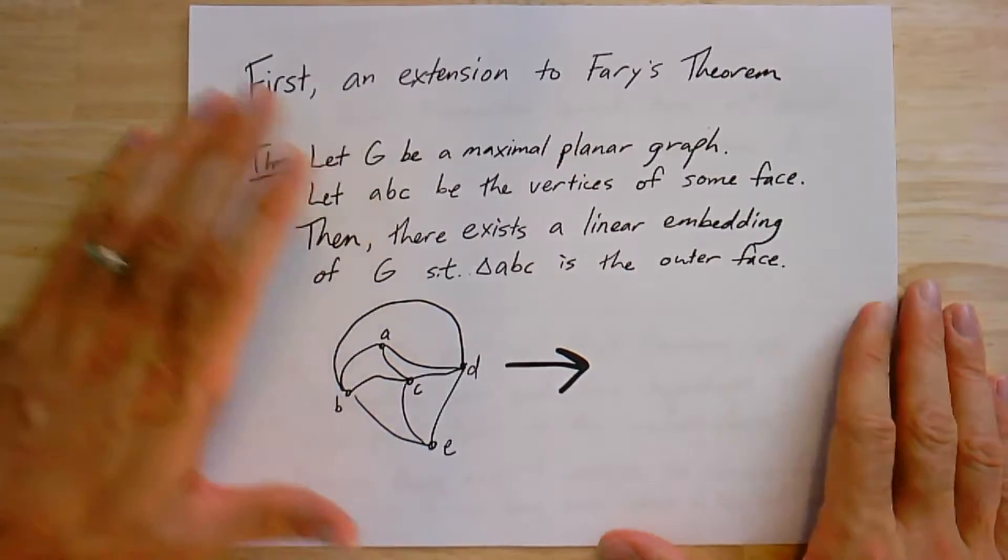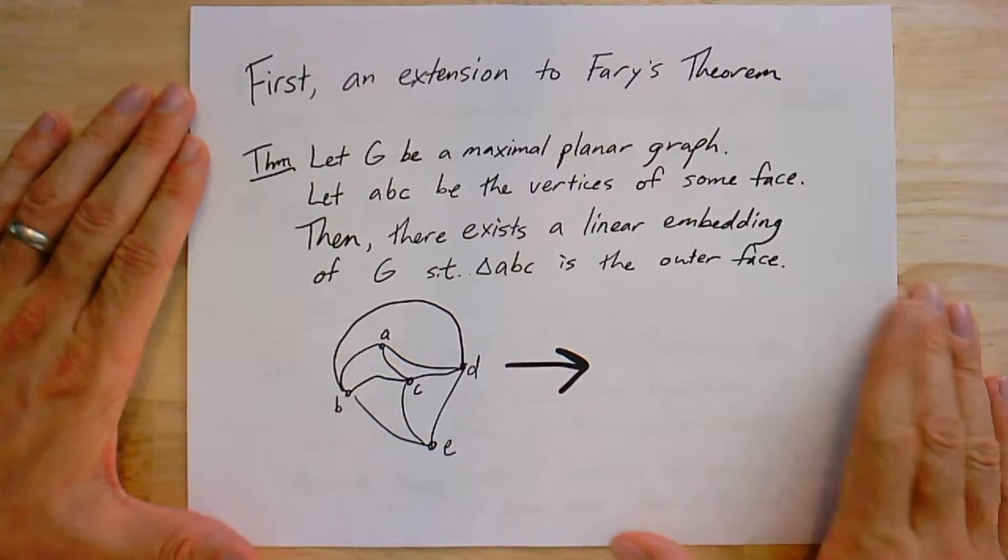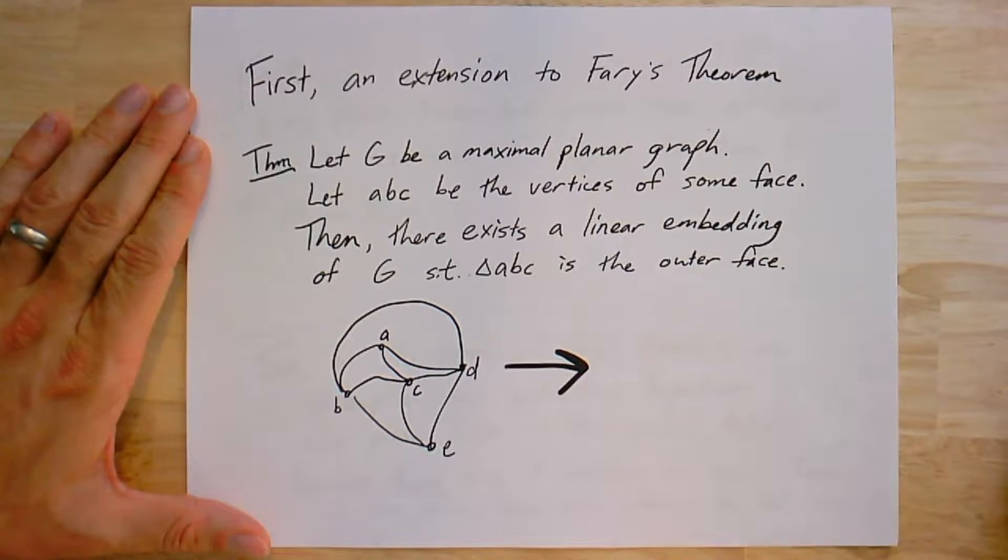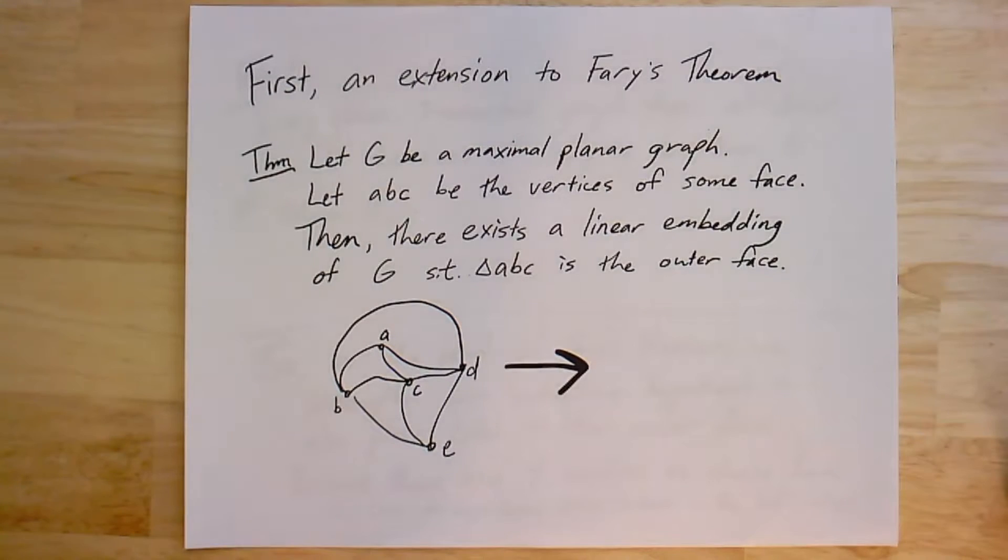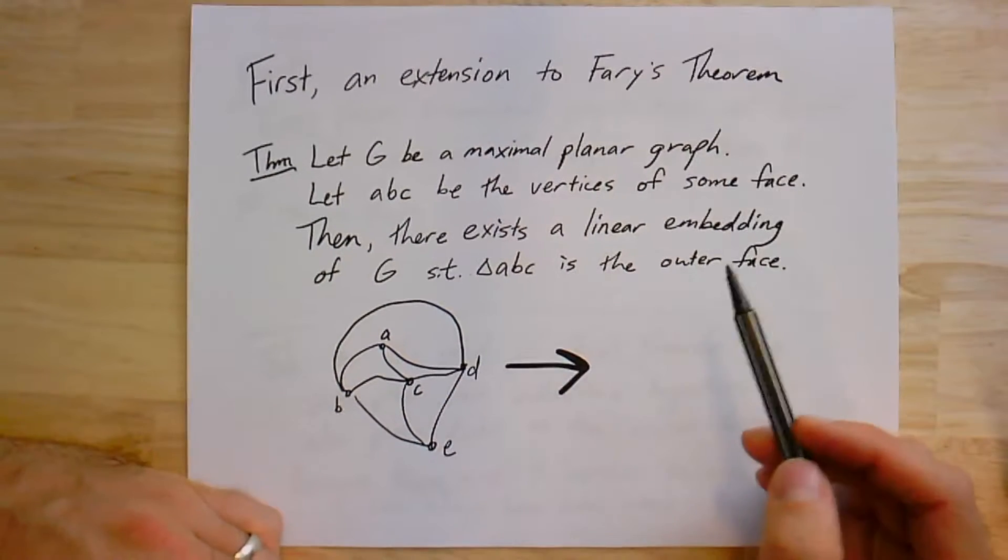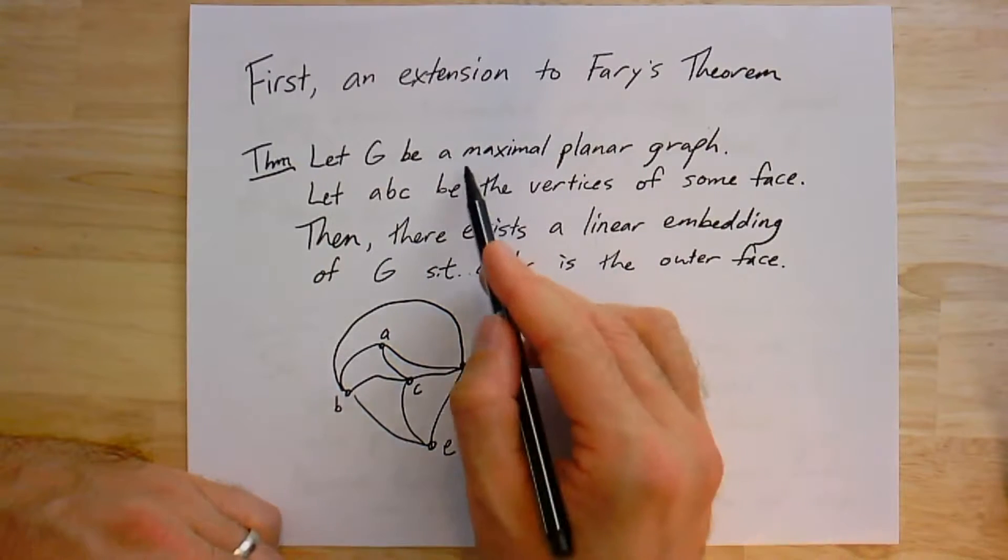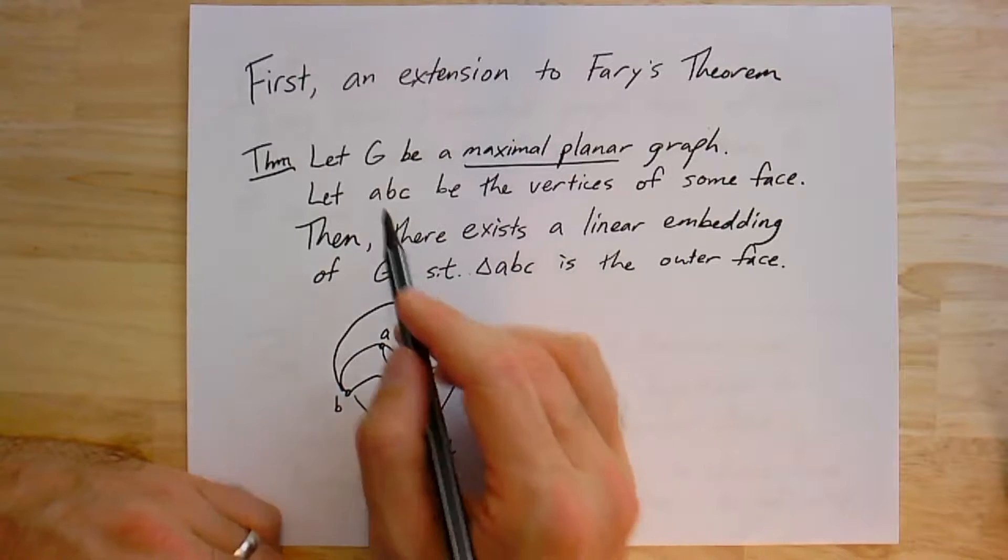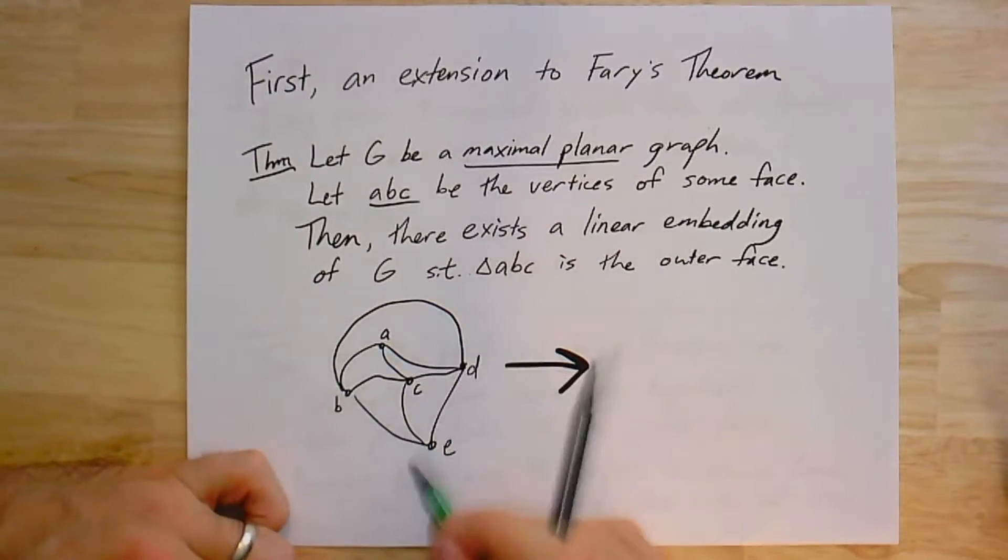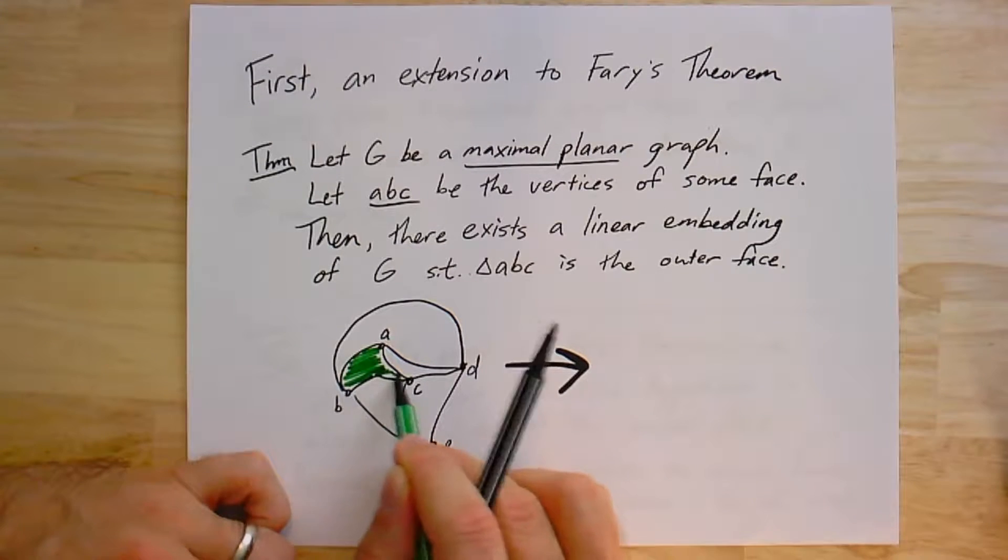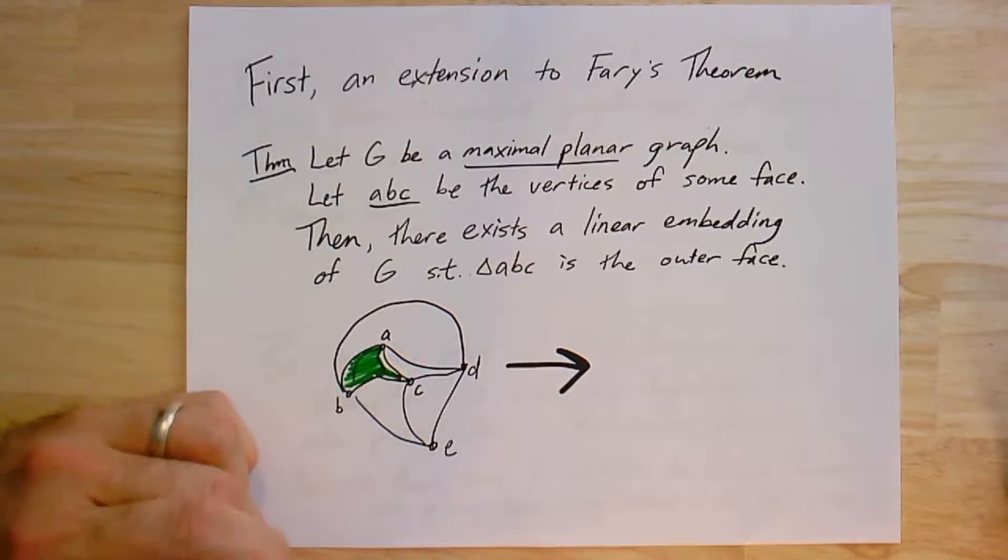We're going to start with an extension to Fary's theorem. If you think of the summary I just gave, this makes sense because it was going to depend on us actually finding a good embedding. Fary's theorem is one of the best tools we have for giving embeddings. Instead of just asking for a linear embedding, which is what Fary's theorem usually gives us, we're going to take a maximal planar graph, so a triangulation, and we're going to pick out any triangle. I've just drawn an embedding of a maximal planar graph. Let's say I just pick this triangle right here, labeled A, B, C.